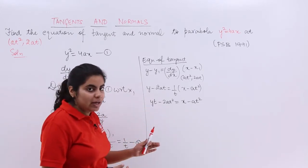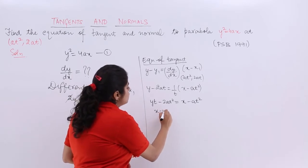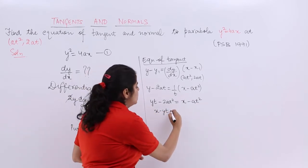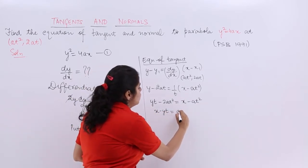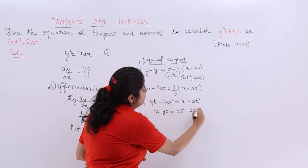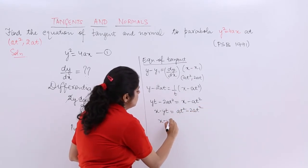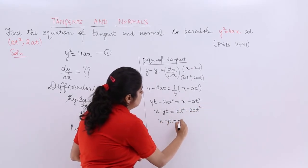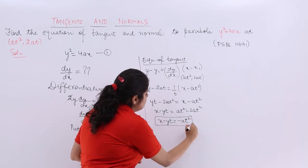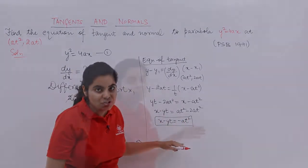Putting x and y on one side: x − yt = at² − 2at² = −at². That is the equation of the tangent.